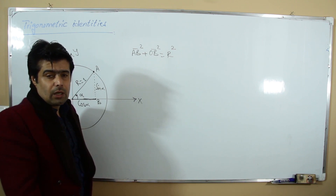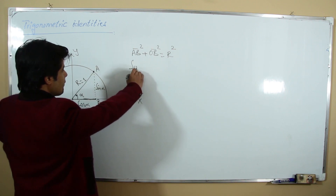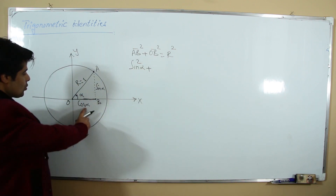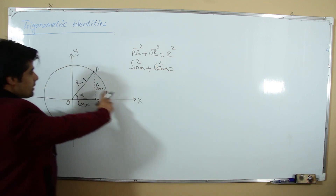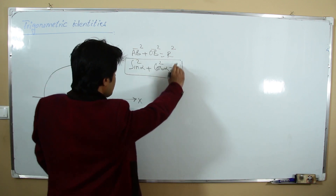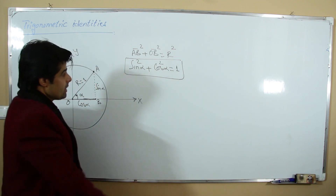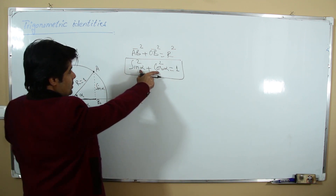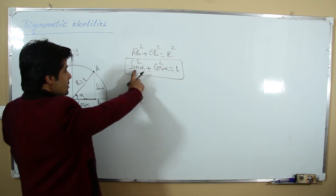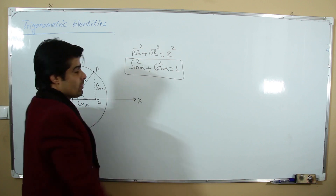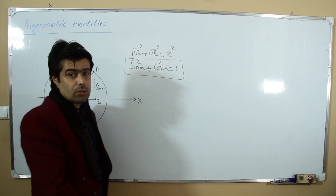According to Pythagoras theorem: AB is sin α, so sin²α plus OB which is cos α, so cos²α equals R², and R is 1, so 1² = 1. This is our fundamental identity: sin²α + cos²α = 1. For every angle, whether 0, 22, or any value, sin² + cos² equals 1.